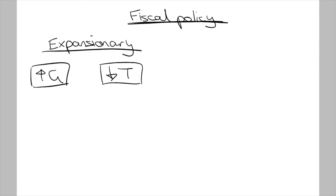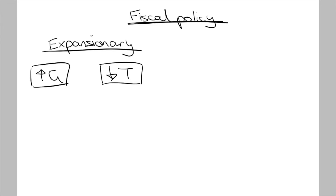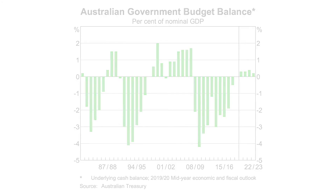As government revenue falls and expenditure increases, an expansionary stance results in the budget outcome moving towards a larger deficit. This can be seen in this graph, where the budget outcome went from a surplus to a deficit, or from an existing deficit to a larger deficit in response to falling economic growth as a result of expansionary stances.